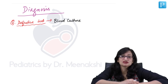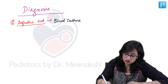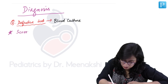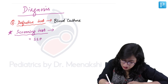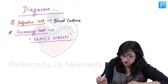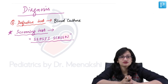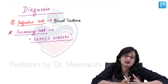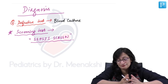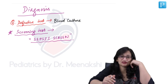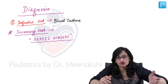There comes the utility of something known as sepsis screen. The screening test for neonatal sepsis is sepsis screen. It consists of 5 investigations, and any 2 out of them if suggestive means the sepsis screen is positive — the baby probably has neonatal sepsis. Time and again you get exam questions on 'all of the following are components of sepsis screen except,' so we need to know what the 5 components are.